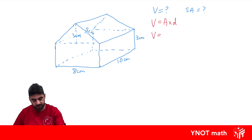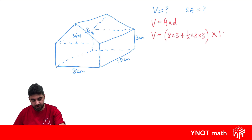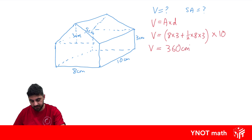The volume is the area of the front face: an 8 by 3 rectangle, plus the triangle on top which is a half times base times height — base of 8 and height of 3. That gives us the area of the front face (rectangle plus triangle), and we multiply all of that by 10, the distance between the two identical faces. That gives us a volume of 360 centimeters cubed.